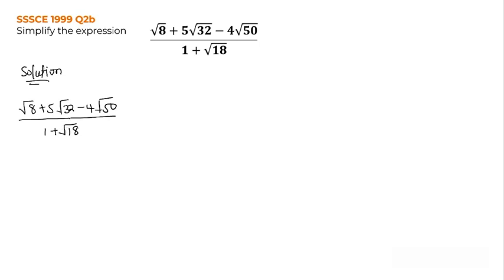Normally when we have expressions like this, where we have root signs or radicals at the top and bottom, we normally multiply by the conjugate — changing the sign and using it to multiply the top and the bottom. That is the normal approach. But if you use that approach here, you realize that you have a lot of root signs at the top — more than two, specifically three. So if you do that, it will make your work very difficult. You have to do a lot of calculation.